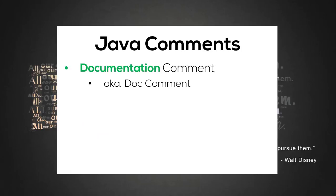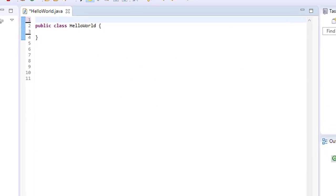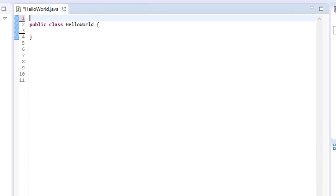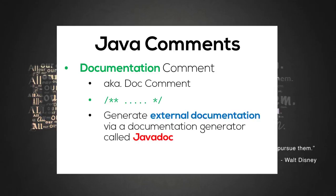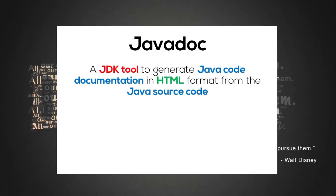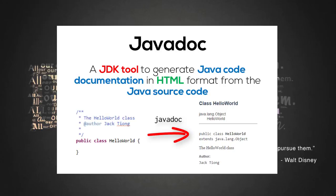Last but not least, the documentation comment — also known as the doc comment — looks similar to the multi-line comment. It begins with a forward slash followed by two asterisks, and ends with an asterisk followed by a forward slash. To include a documentation comment in Eclipse, just type a forward slash followed by two asterisks and press Enter. The documentation comment is special because it can be used to generate external documentation about your source code via the documentation generator tool called Javadoc. Javadoc is a tool that comes with the JDK and generates Java code documentation in HTML format from the Java source code.